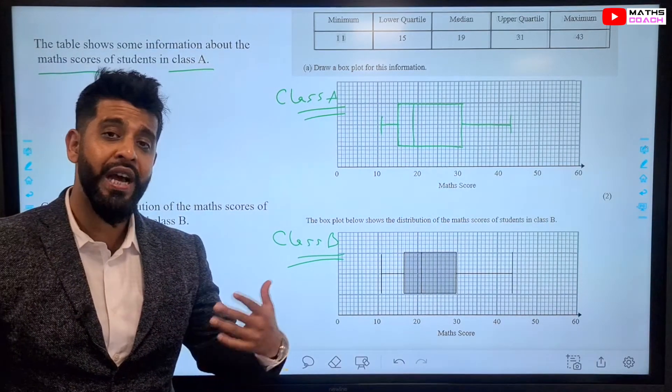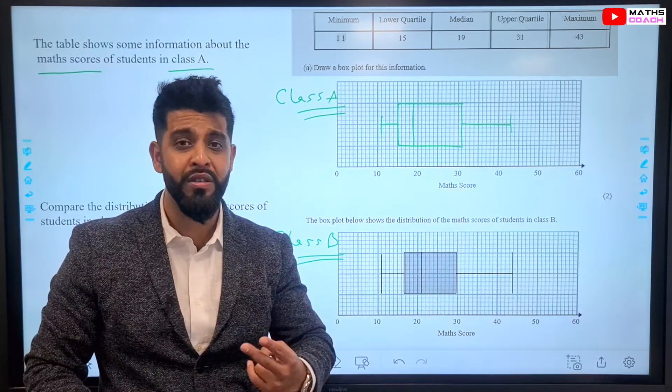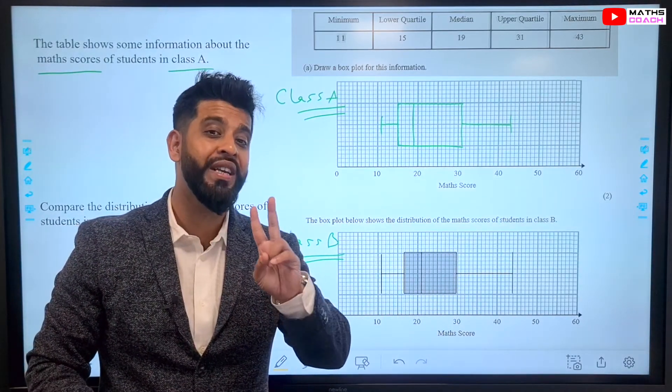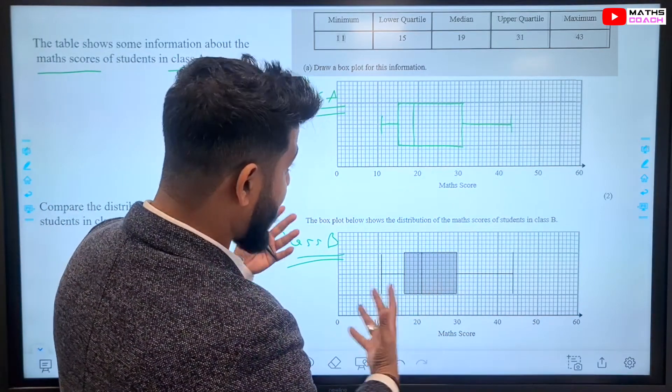We'll compare. Now, usually, depending on how many marks are offered, usually, questions like this give you two marks, which means you need to have two different points. So, if you look at this, what kind of things can you see here?